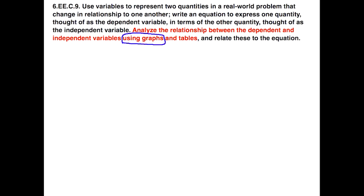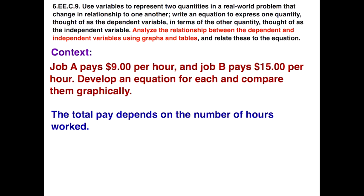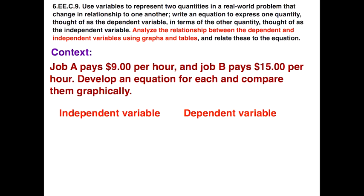The standard also talks about using graphs. So let's focus on that. Let's look at this context. Job A pays $9 an hour and job B pays $15 per hour. Develop an equation for each and compare them graphically. First of all, the decision, dependent versus independent variable. In this case, the total pay would depend on the number of hours that you work. So our independent variable and our dependent variable, total pay is dependent on the hours worked.